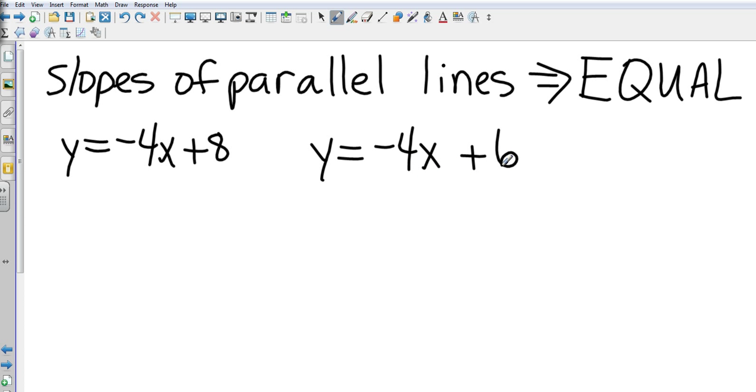If you remember from algebra 1, Y equals MX plus B form, that means M in this one is negative 4. And M in our second line is negative 4. Remember that M is slope. And so if those slopes are the exact same, then that means they are parallel.